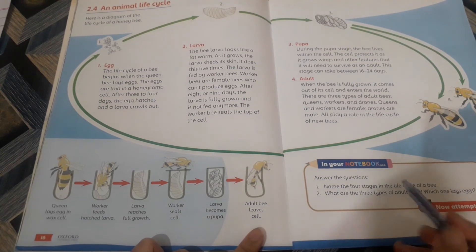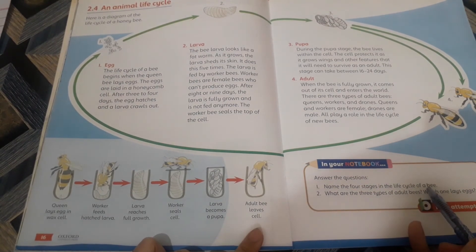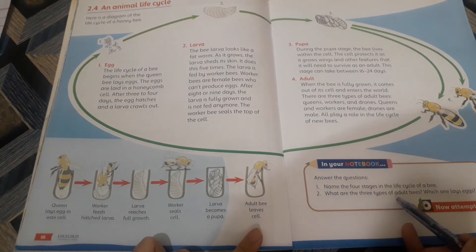There are given two questions: Name the four stages in the life cycle of a bee. What are the three types of adult bees? Which one lays eggs?